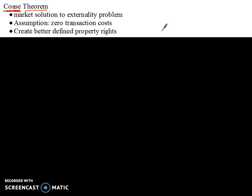Hi and welcome back to another podcast with Mr. Hagan. On this podcast we're going to continue to talk about externalities, but we're going to look for an alternative solution. On past videos we've talked about solutions developed by Arthur Pigou — the Pigouvian tax and the Pigouvian subsidy. Now we're going to look at the ideas developed by Ronald Coase, what has become known as the Coase Theorem. Instead of looking for a government solution using taxes and subsidies, we're going to look for market solutions to externality problems.